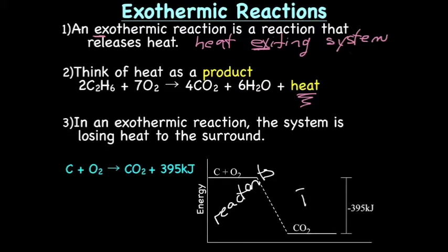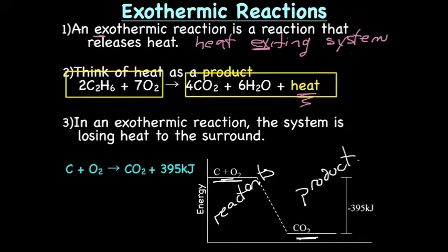In the energy diagram, what you'll notice is that the reactant molecules have greater energy than the product molecules. The reactants taken together with all the products have an equal amount of energy, but because we're forming heat that floats away, the reactants have more energy than the products. The change in energy is a negative number — in this case, negative 395 kilojoules. That's an exothermic reaction.